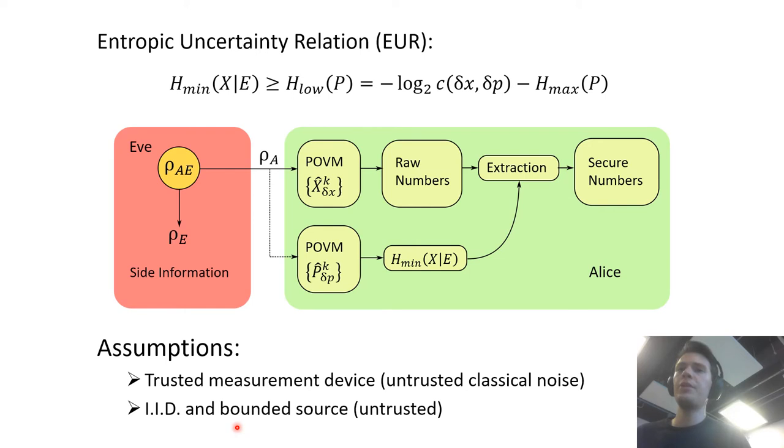And we also require the source to be bounded. Indeed this EUR works when the POVM for P and X cover the full phase space which of course experimentally is not the case because our detector will saturate at some point. So we assume when we use this EUR that the input state cannot saturate our measurement POVM.